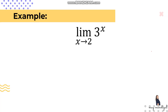Let's have an example. We have to evaluate the limit of 3 raised to x as x approaches 2. Since this is an exponential function, we can just substitute the value of a, which is 2. So this becomes 3 raised to 2, or 9. Therefore, the limit of 3^x as x approaches 2 is equal to 9.